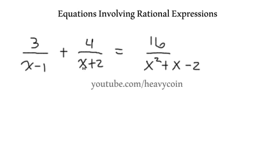So what I'm going to do here is I'm going to get a common denominator between these two fractions here and that means I'm going to end up writing an x plus 2 over x plus 2 and then an x minus 1 over x minus 1.